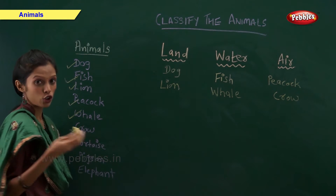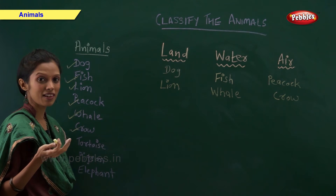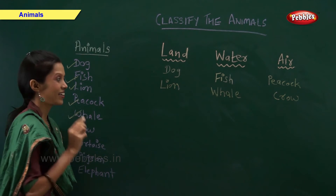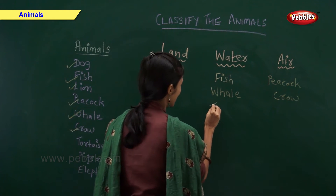Tortoise. Tortoise is which type of animal? Right, it is a water animal.